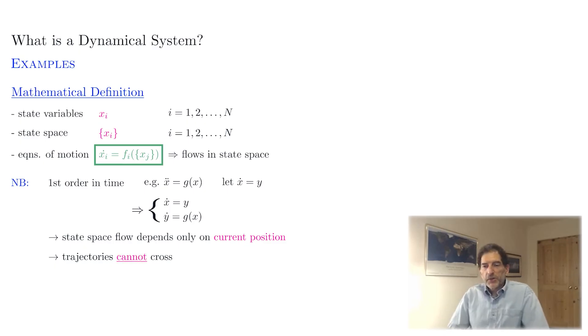Another important consequence of the first order nature is that trajectories cannot cross. Imagine the opposite. Suppose that there are two trajectories that happen to cross each other. At the point where they cross, there are two outgoing directions from a single point, which contradicts the notion that the flow depends only on the current position. So trajectories cannot cross, which simplifies the description because we have kind of a smooth flow pattern without any crossings going on.